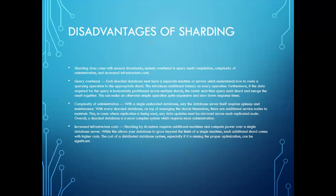Sharding does come with several drawbacks: query overhead, complexity of administration, and increased infrastructure cost. Query overhead means that if you want to retrieve student details from a specific program like MSDS, those students may be in shard 1, shard 2, shard 3, or shard 4. To execute the query, you need to search each and every shard, causing overhead as the query works across many shards.